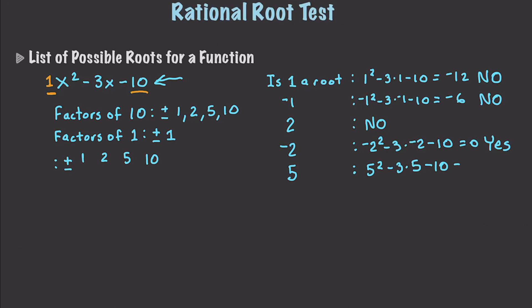So we found our roots. Descartes' rule of signs actually tells us we can stop now because we found our two roots — and Descartes' rule of signs tells us there are only two. So that gives us our final answer: the factors are x plus 2 times x minus 5. We found our factors for our formula right here.